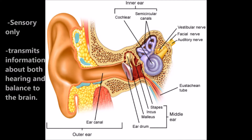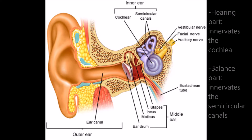The vestibular cochlear nerve is sensory only. It, along with the hair cells of the inner ear, transmits information about both hearing and balance to the brain. The hearing part of the nerve innervates the cochlea. The balance part of the nerve innervates the semicircular canals, which are tubes inside the ears.